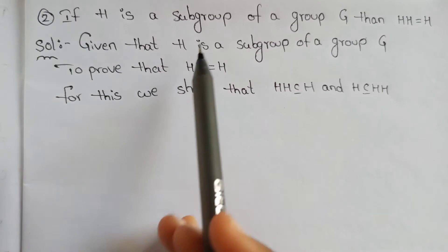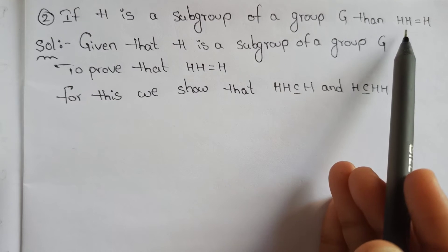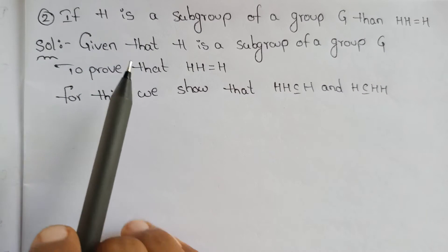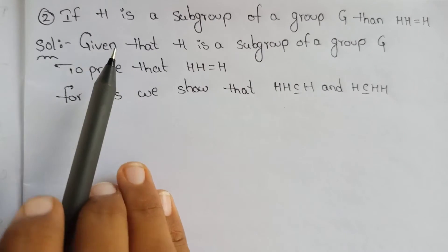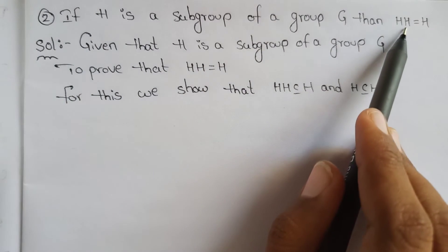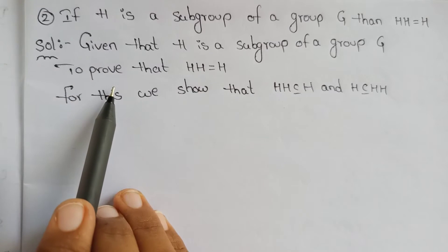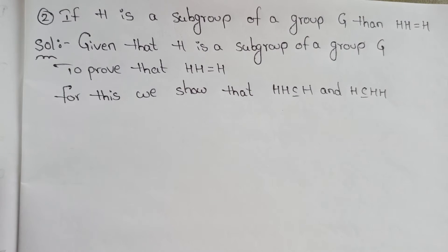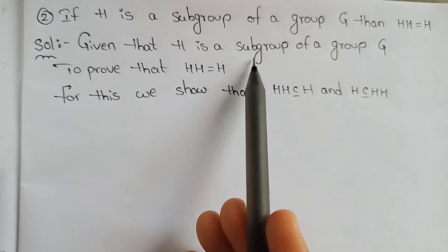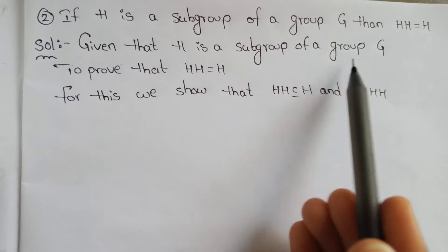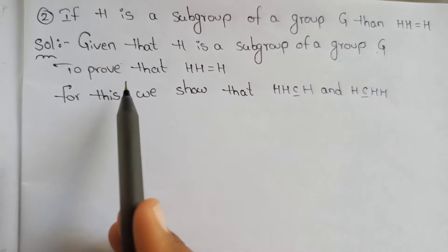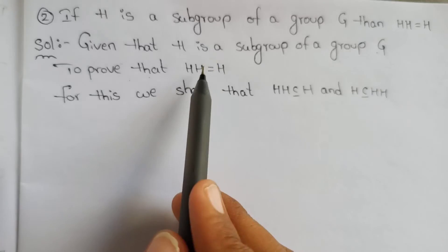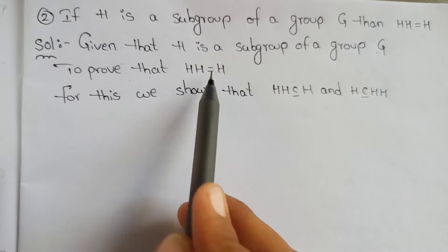If H is a subgroup of a group G, then H·H is equal to H. We have already talked about H being a subgroup of G. We can prove H·H is equal to H. Given that H is a subgroup of a group G, we have to prove H·H is equal to H.